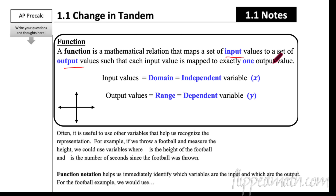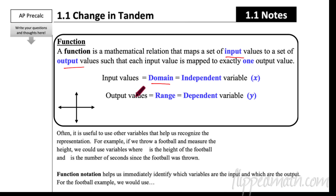We have different names for the input and the output. Sometimes we go by domain — remember, domain is the input, sometimes we call it the independent variable, and we usually use an X for this, as you've seen in Algebra 1 and Algebra 2. The output values are called the range or the dependent variable. In AP Stats we call that the response variable, but it is usually denoted with a Y.